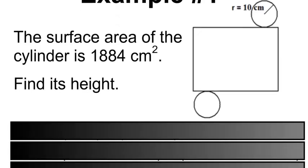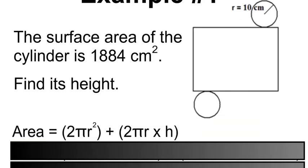We'll start by writing the formula itself. So the formula will be Area equals 2πr² plus 2πr times h.